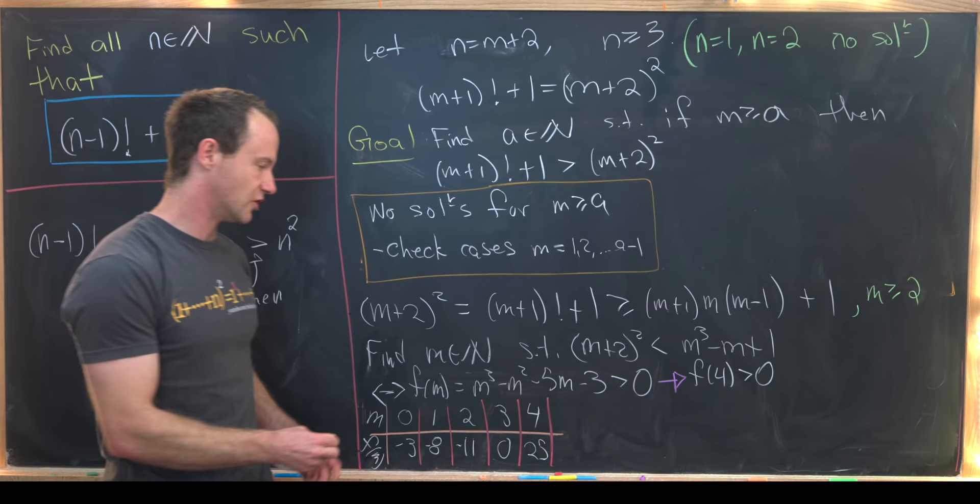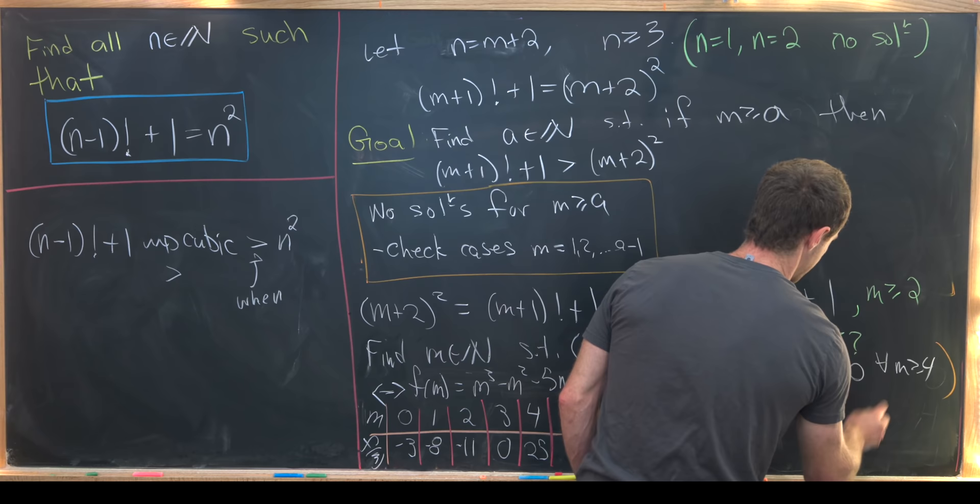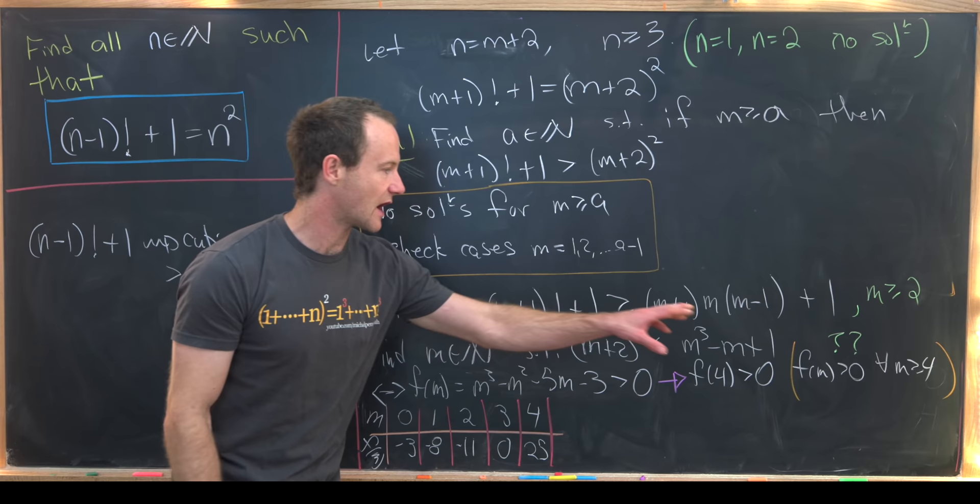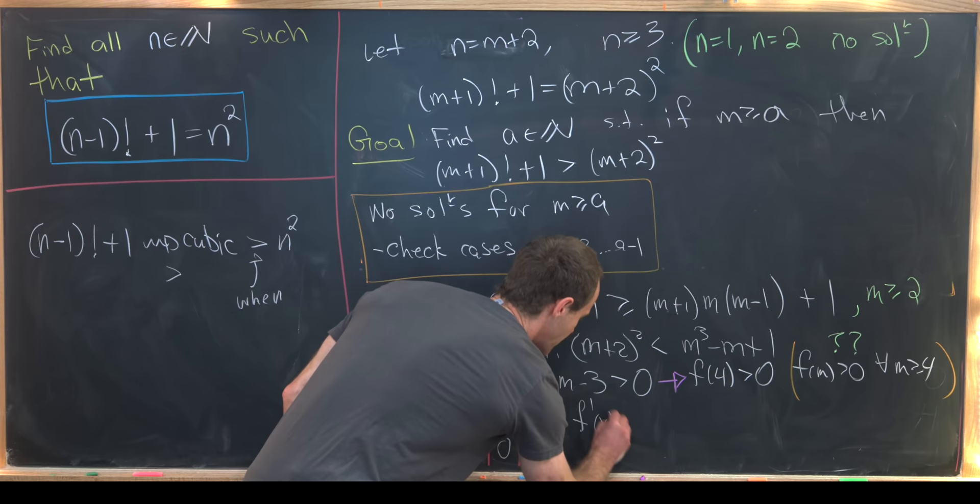So that tells us that f of 4 is most definitely bigger than 0. Now it seems like since this is a cubic polynomial we probably have f of m being bigger than 0 for all m bigger than or equal to 4. So I'll put a big question mark over this because this is actually what we want to end up showing. So that means that our a value as described in this orange box will be 4. That's actually not too hard to check and we can do that with a little bit of calculus.